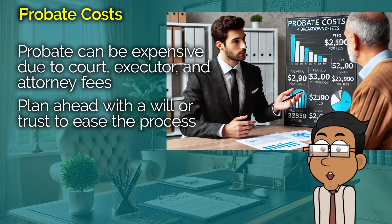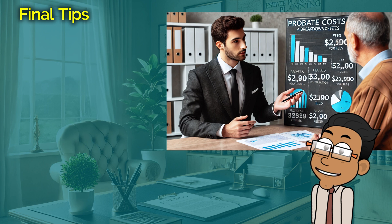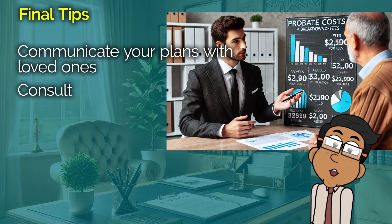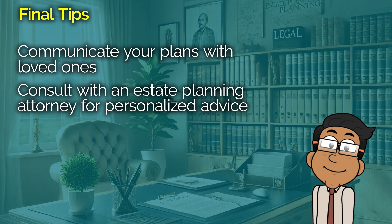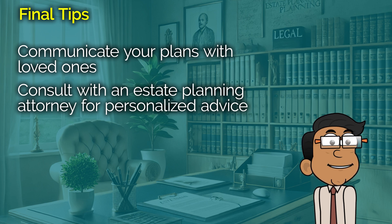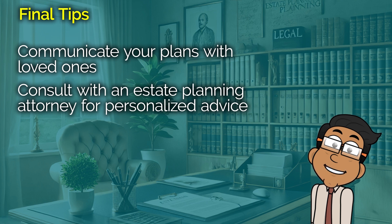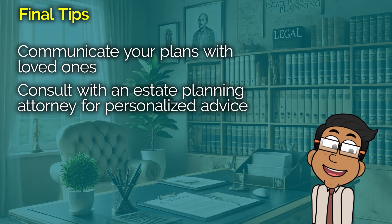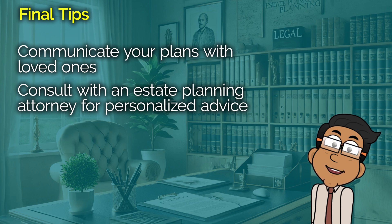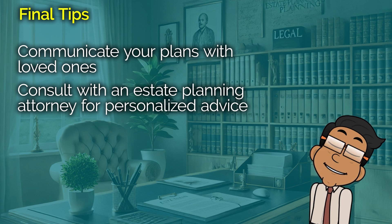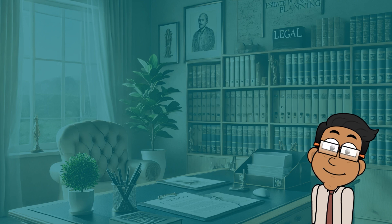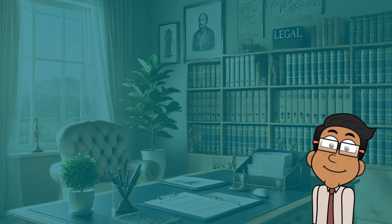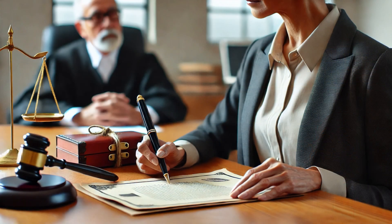So, what can you do to prepare for probate and make the process easier? First, consider creating a will if you don't already have one — it clearly outlines your wishes and can make the probate process smoother and quicker. Second, think about setting up a living trust for your major assets to help keep them out of probate. Another tip is to keep detailed records of all your assets and debts, and regularly review and update your beneficiary designations on financial accounts and insurance policies. Also, communicate with your loved ones about your plans, let them know where to find important documents and who your executor will be, to help prevent confusion and disputes.